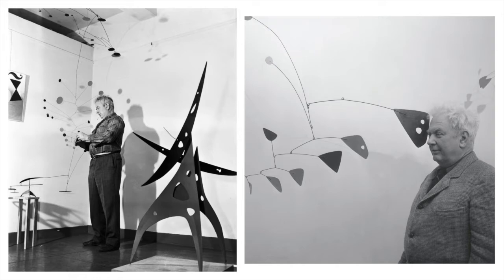Here you can see Alexander Calder next to some of his sculptures and mobiles. What I love about Alexander Calder is how down-to-earth he was as a person. He's actually from Connecticut — born there and then lived in upstate New York where he had a family and a farm. He was just a very playful, fun-loving type of guy, and I think you can see that through his artwork.